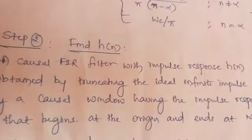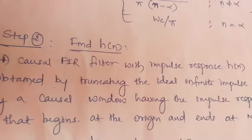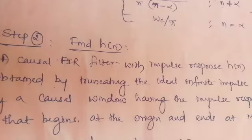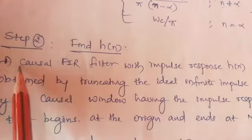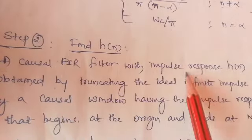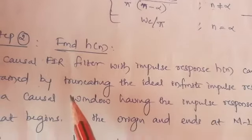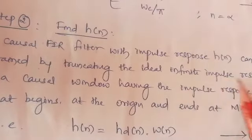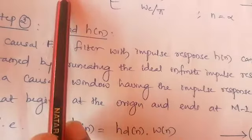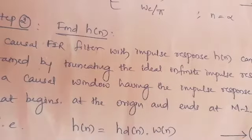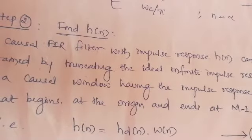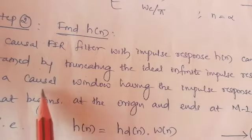Step two, finding the h(n). h(n) indicates what? It is the causal FI filter. Causal FI filter means it contains these values only for n is greater than or equal to zero. Find h(n), a causal FI filter with impulse response h(n) can be calculated by truncating the ideal infinite impulse response.